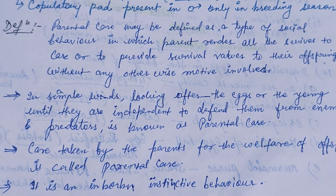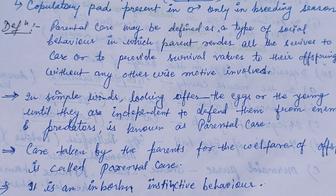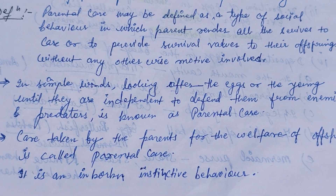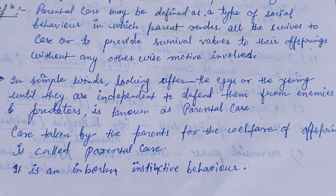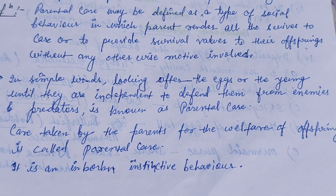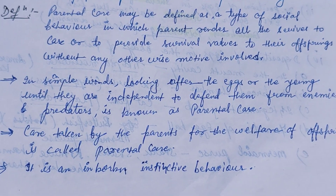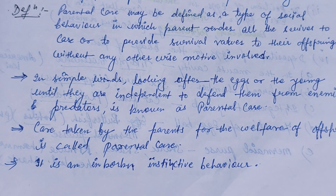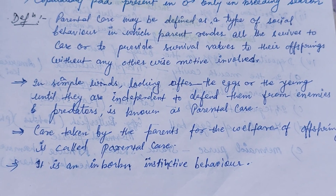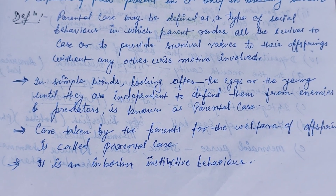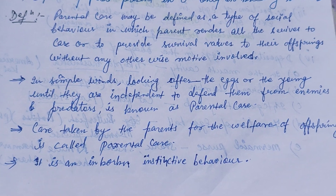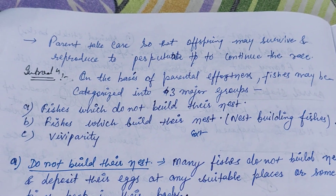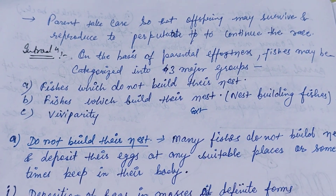Through this video we will discuss parental care in fishes. Parental care may be defined as a type of social behavior in which parents render all services to care for or provide survival values to their offspring, without any other motive involved. In other words, the care taken by parents for the welfare of their offspring is called parental care.